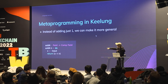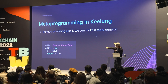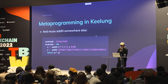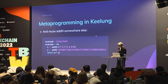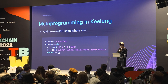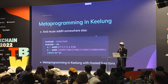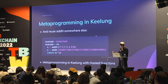We can modify it to make it more general — instead of just adding one, we can add an N and use this add-N function everywhere. It's almost like a macro, similar to templates in Circom. This is essentially meta-programming in Keylong, possible because we're embedded in a meta-language called Haskell that has functions we can make use of.